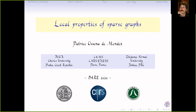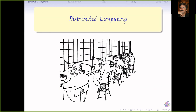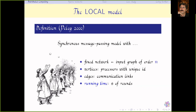Let me start with some very basic definitions. The first definition is the local model. We consider some fixed network, and what is interesting in this model is that the communication network we use is also the input graph of the problem. This network has n nodes, and these nodes are supposed to be infinitely powerful computers that can compute whatever you ask in no time.